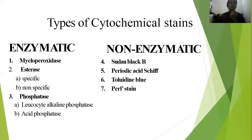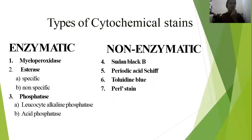Cytochemical stains are divided into two types: enzymatic and non-enzymatic. The enzymatic category includes MPO (myeloperoxidase), esterase, and phosphatase. Esterase is further divided into specific and non-specific esterase, and phosphatase is divided into leukocyte alkaline phosphatase and acid phosphatase.